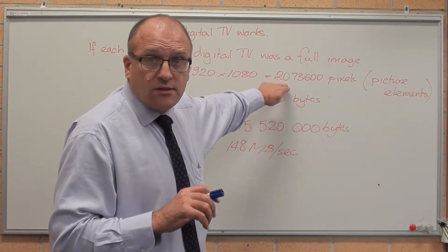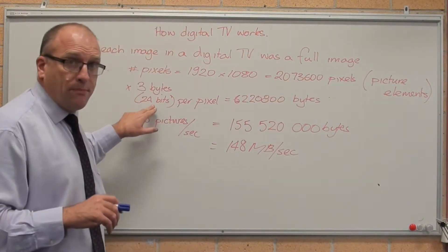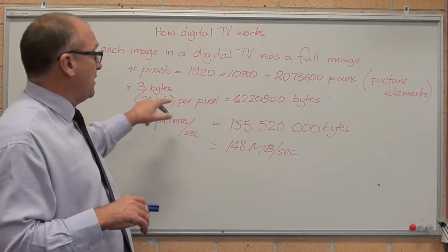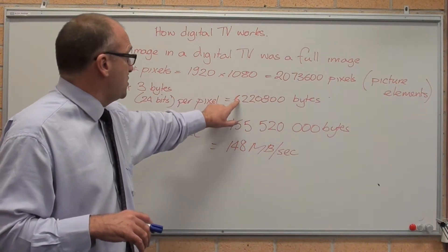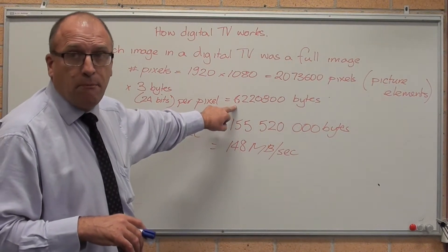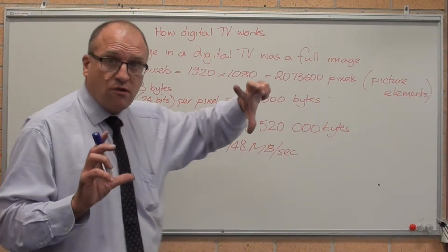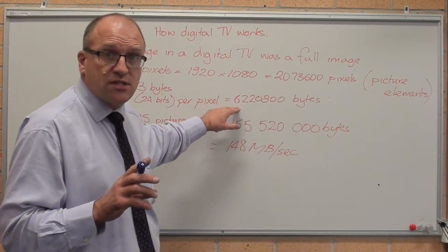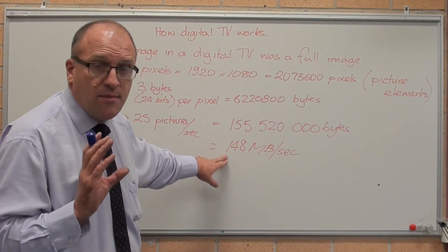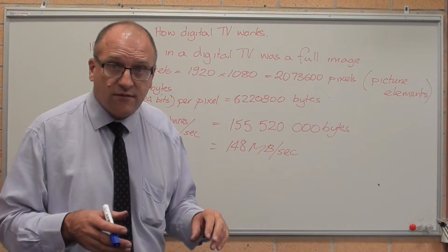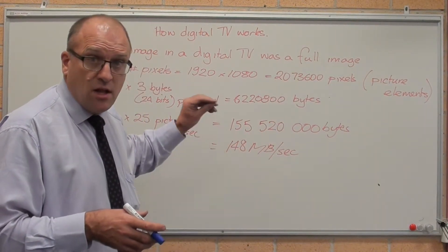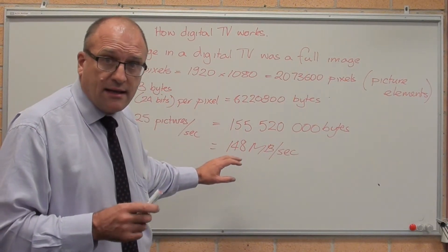you have what they call 24 bits, 65 million colours per pixel. Multiply that by 3, gives you that many bytes — 6,220,800 bytes per image on the screen, which is 6 megabytes. At 25 frames a second, that gives you 148 megabytes a second of images being processed in your digital television receiver and thrown up on the screen — a fair bit, far more than your internet can carry.